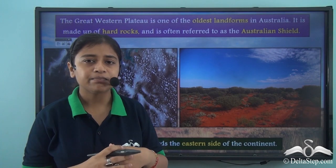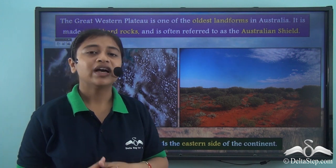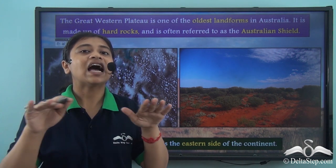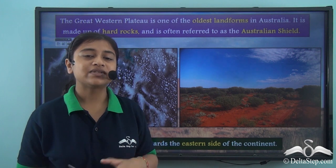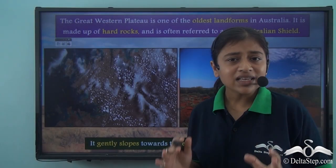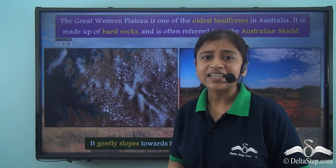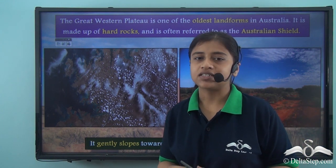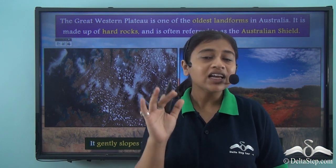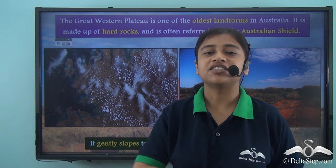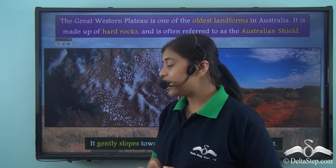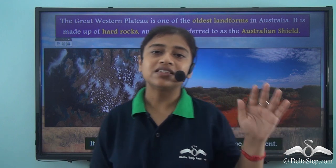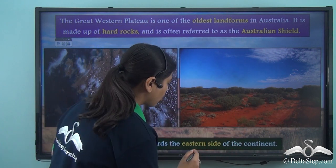The Great Western Plateau is a high elevated land with a flat terrain, rugged cliffs, and sharp edges. This plateau gently slopes towards the eastern side of the continent, meaning it is higher in elevation in the western part and gently slopes down towards the east.